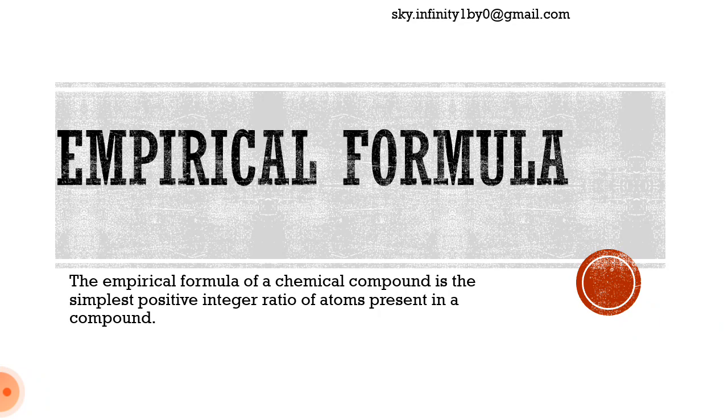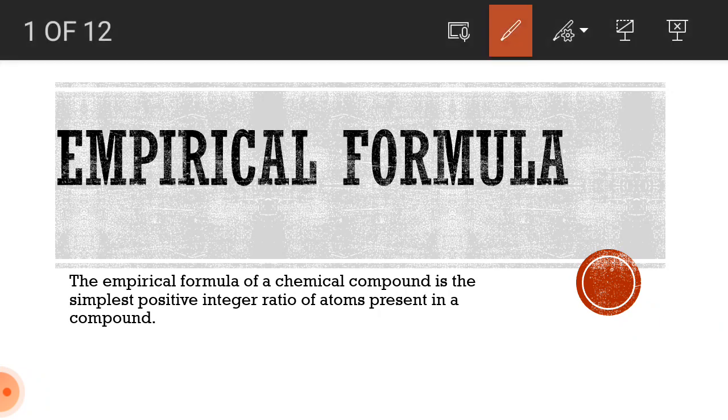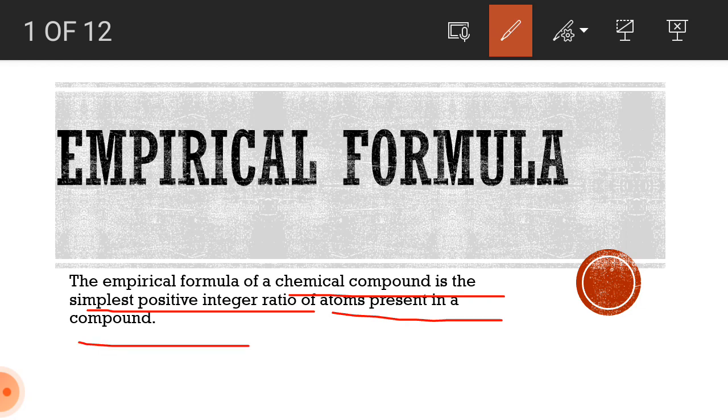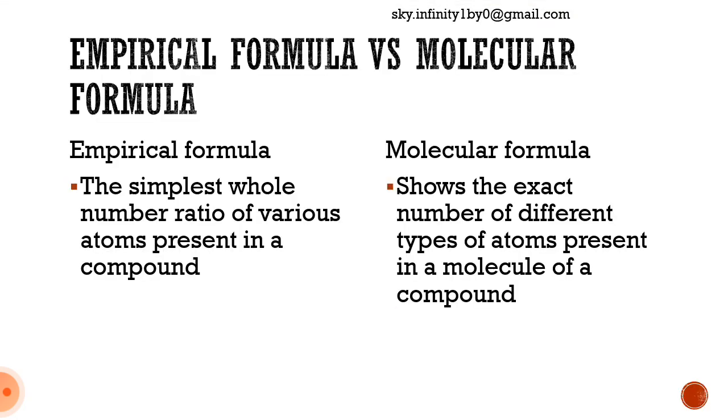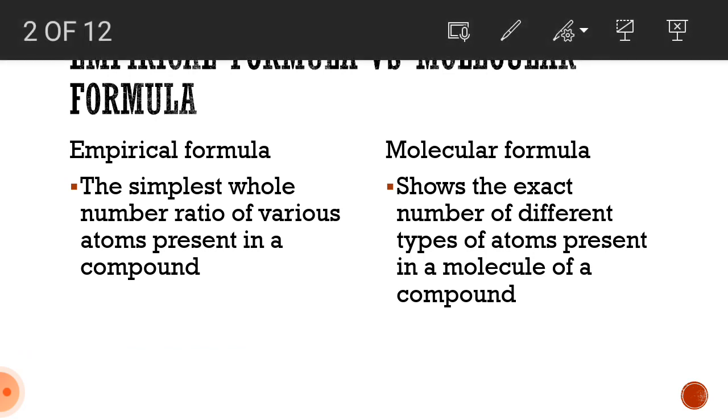To start off, empirical formula of any chemical compound is the simplest positive integer ratio of atoms present in the compound. So, empirical formula is just basically a ratio. We know that molecular formula gives us the exact number of atoms which are present inside a molecule, but on the contrary, empirical formula will simply give us the ratio and nothing else.